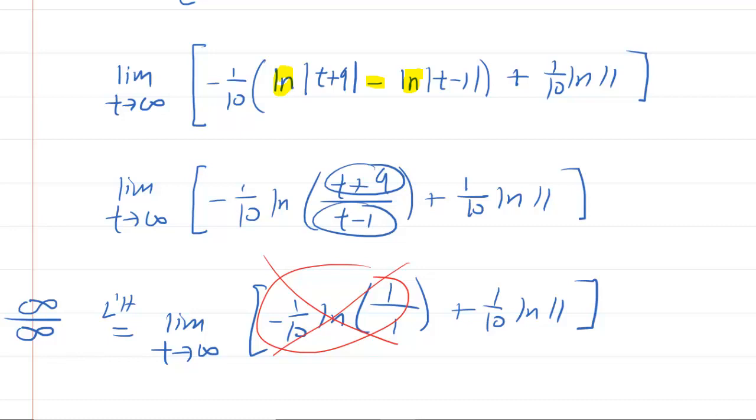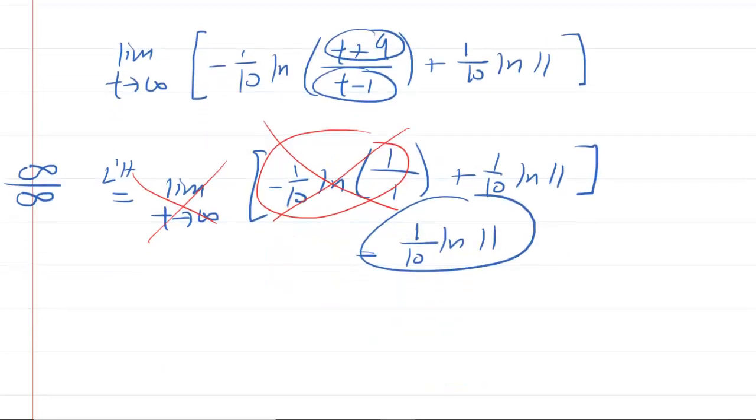We stated earlier that the natural log of 1 is zero. So this entire term here disappears, it goes to zero. Therefore, we no longer need the limit because there's no longer the variable t in our answer. So we're actually just left with 1/10 ln of 11. And since that is a finite quantity, this limit is indeed convergent.